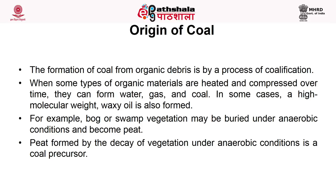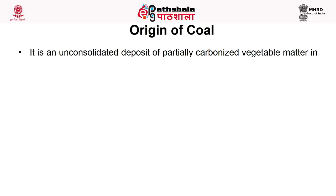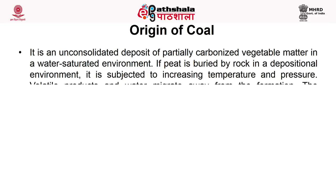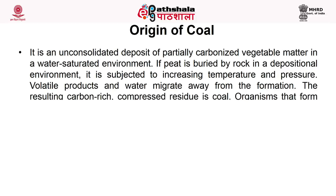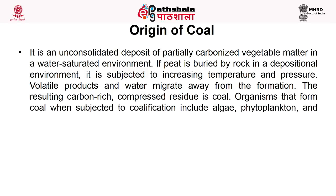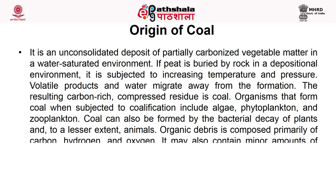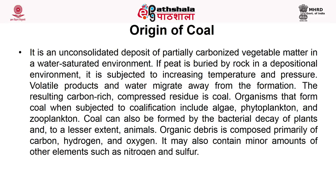For example, bog or swamp vegetation may be buried under anaerobic conditions and become peat. Peat, formed by the decay of vegetation under anaerobic conditions, is called a precursor. It is an unconsolidated deposit of partially carbonized vegetable matter in a water-saturated environment. If peat is buried by rock in a depositional environment, it is subjected to increasing temperature and pressure. Volatile products and water migrate away from the formation, and the resulting carbon-rich compressed residue is coal. The organisms that form coal when subjected to coalification include algae, phytoplankton and zooplankton. Coal can also be formed by bacterial decay of plants and to some extent by animals. The organic debris is composed primarily of carbon, hydrogen and oxygen, and may also contain minor amounts of other elements such as nitrogen and sulphur. Based on the substrate from which coal is formed, the composition varies.